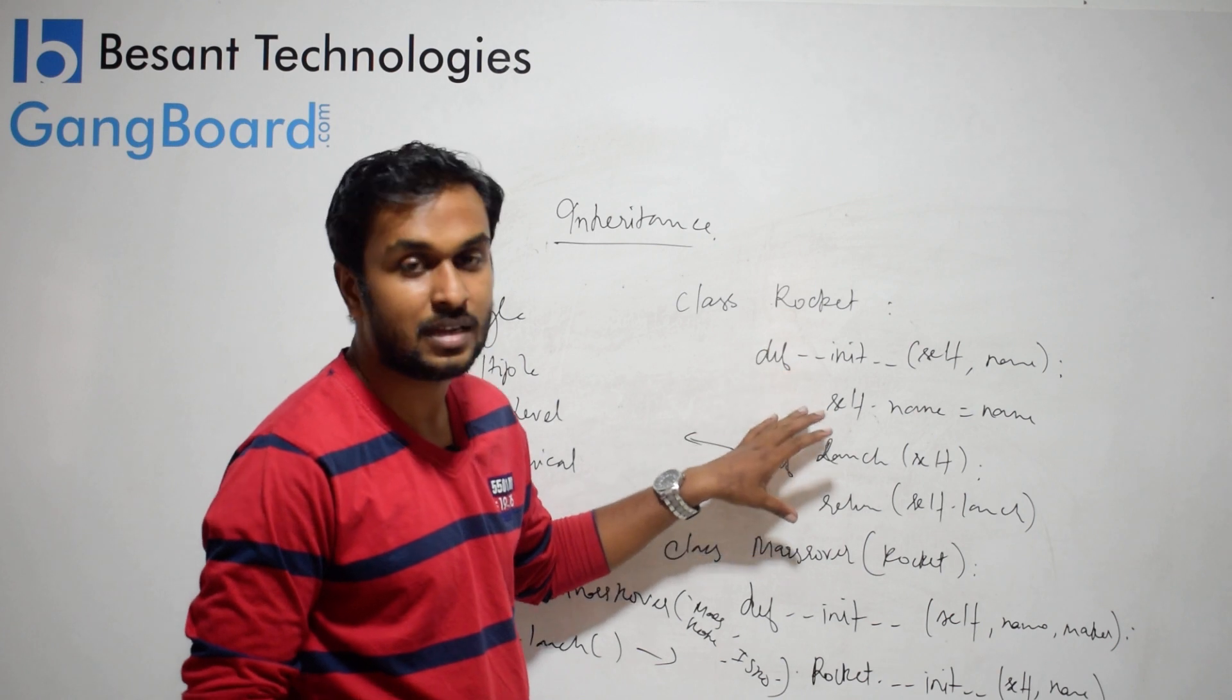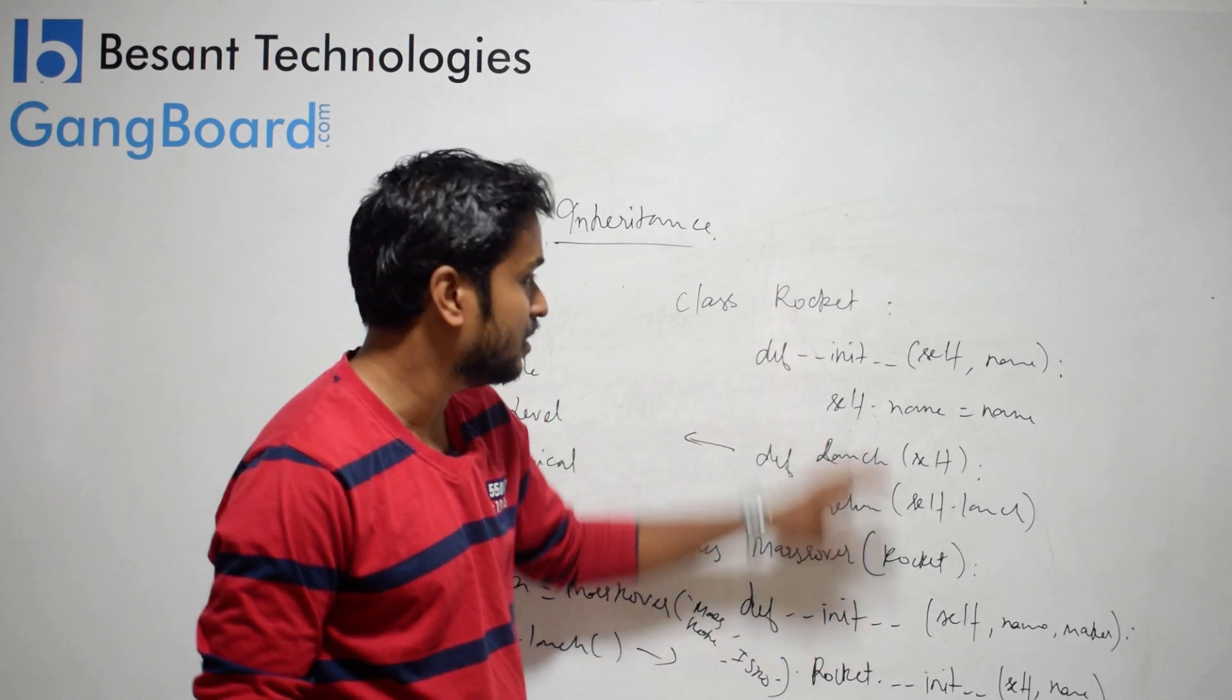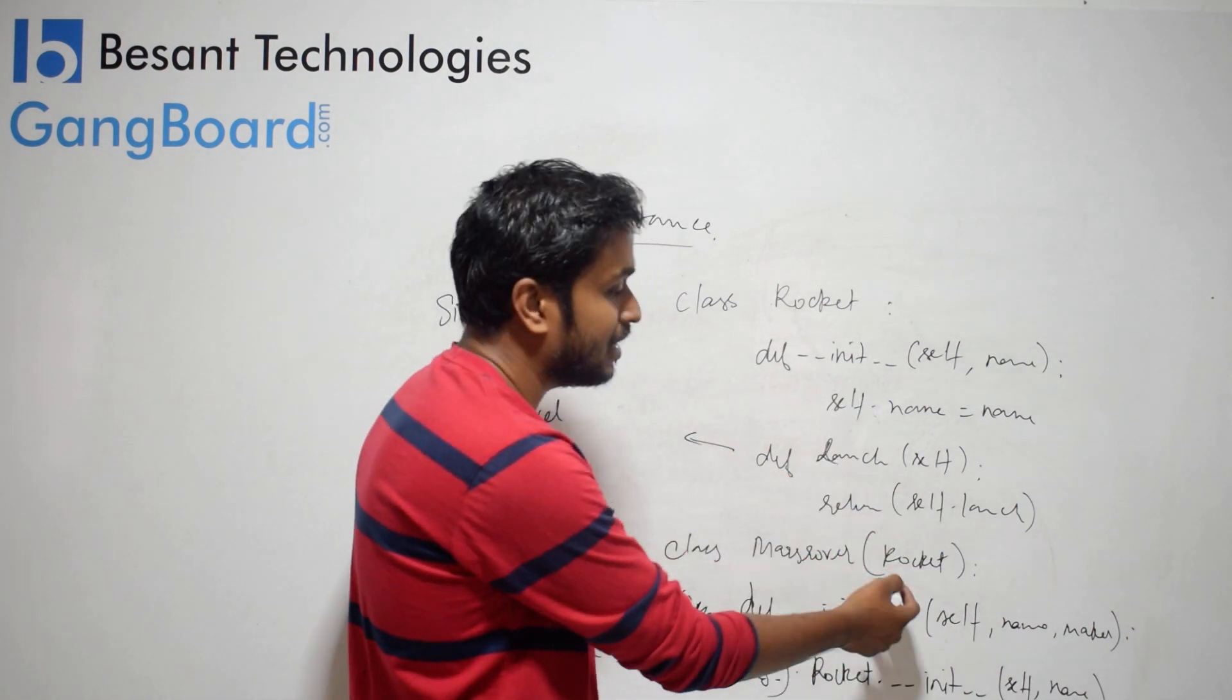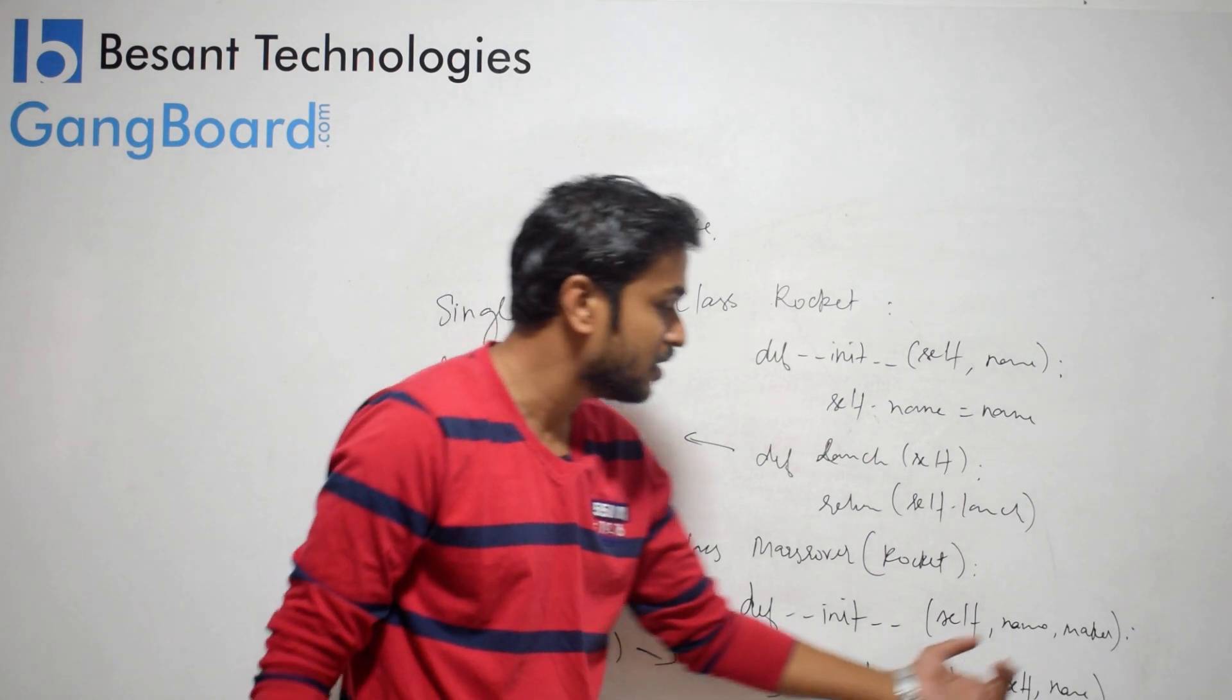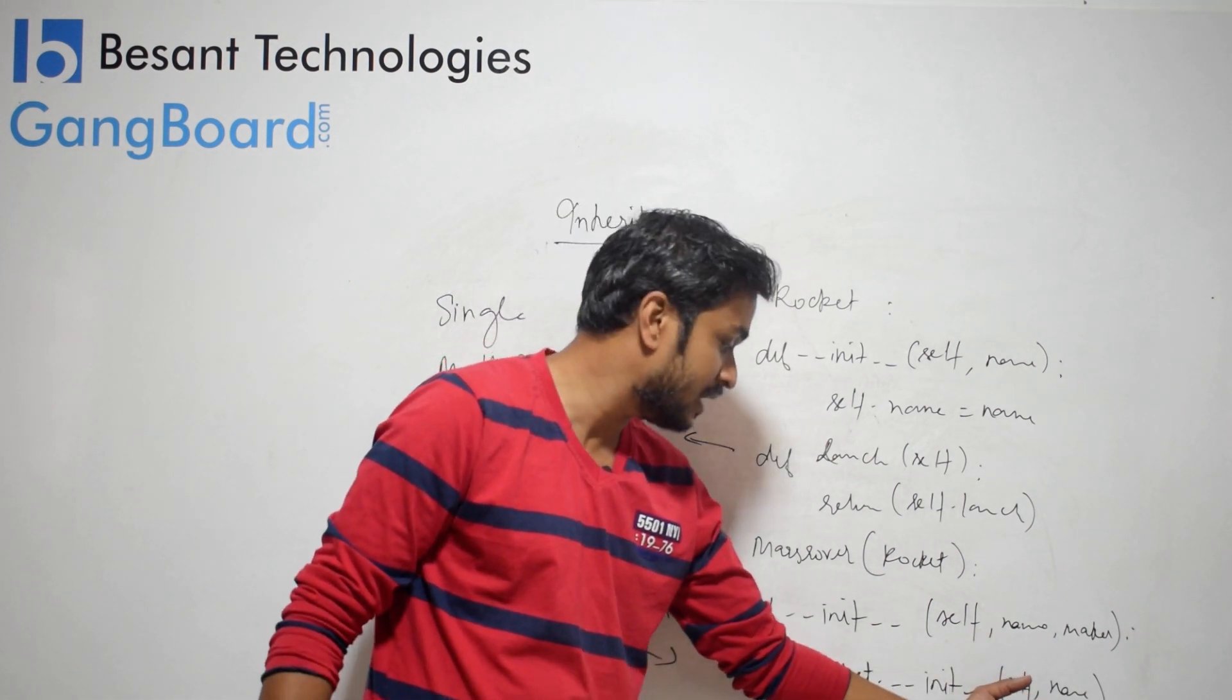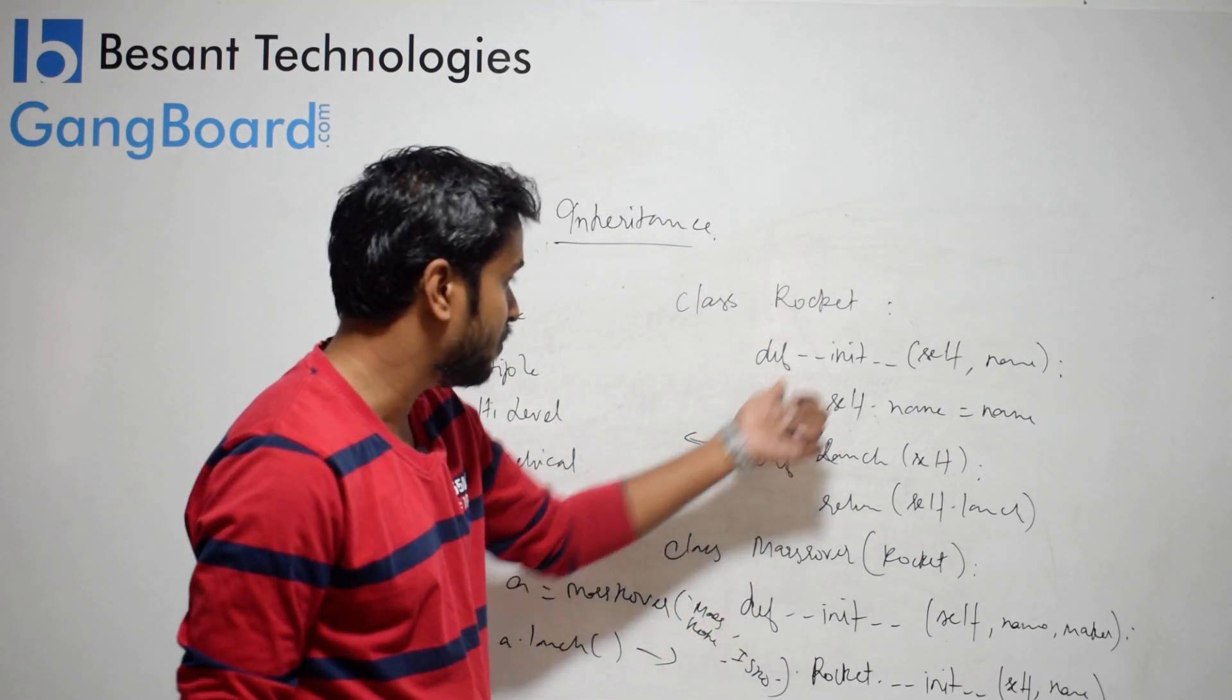If you want the same methods from one class in another class, just inherit it. Inheritance syntax: give the class name in brackets. In the init constructor, define your base class. Then you can normally call any methods from the base class.